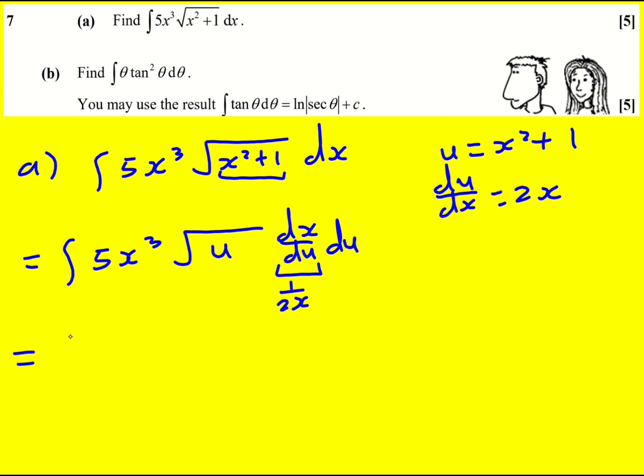So let's just tidy this up a little bit. I'm going to have 5 over 2x squared because the x cubed is going to cancel partially with the x and then u to the half du.